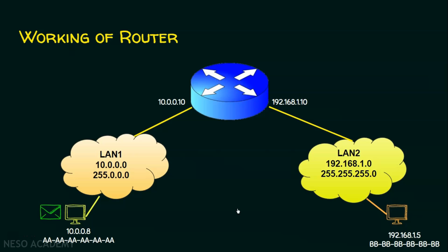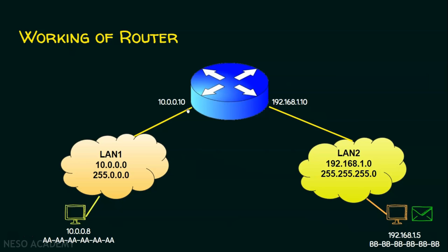Let's see the animation. The computer generates the data, which is received by interface 10.0.0.10. The router forwards the data to the other interface, 192.168.1.10, and the destination receives it. The IP address of this interface — 10.0.0.10 — is the default gateway for all PCs in LAN 1. Similarly, all devices in LAN 2 will use 192.168.1.10 as their default gateway. That's how a router works.